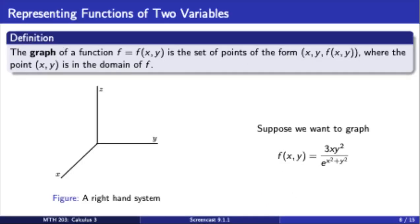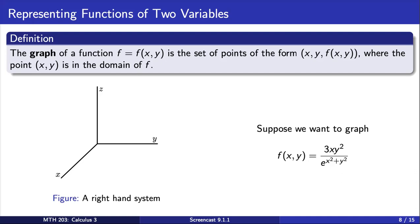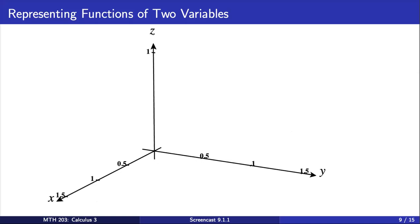Now, suppose we want to graph the function f that we looked at before. To do this, we're going to set up a right-hand system. And now in this graph, each ordered pair (x, y) in the domain of f gets assigned to a z value, which is the output of our function f. For example, consider the ordered pair where x equals 0.5 and y equals 1. Our function f assigns this ordered pair a z value. The z value here is approximately 0.43. In doing this, this gives us a point with three coordinates in three space. The first coordinate is the x value, the second is the y value, and the third is the z value.